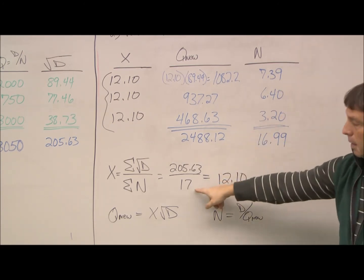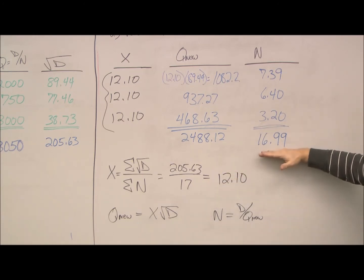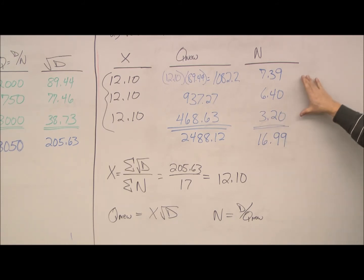Now, originally, we know that we had 17 orders per year. So, basically, the order quantity here within the roundoff has stayed at 17. What has changed is the mix. Originally, we were ordering this four times a year, eight times a year, five times a year. You can see how that's changed a little bit.